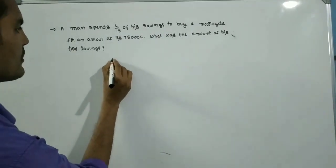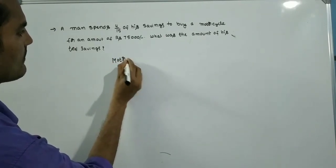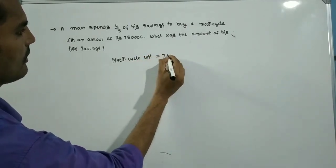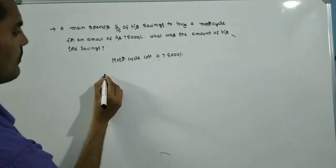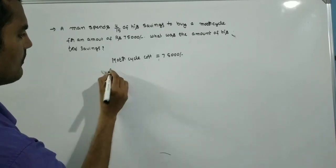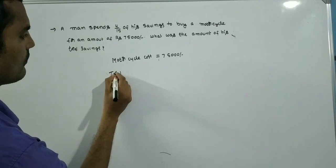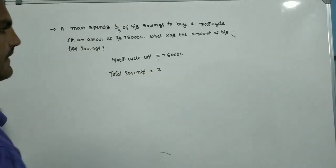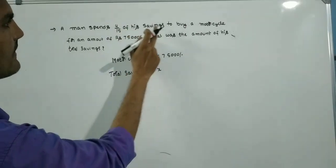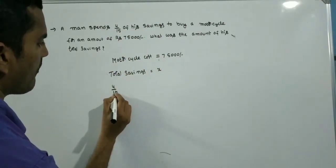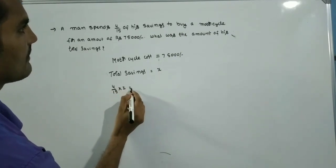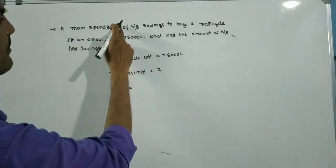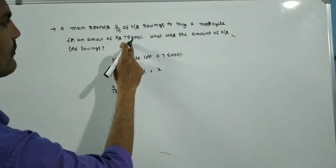The motorcycle cost equals Rs. 75,000. Total savings we don't know, so we assume it as X. The problem states 4/15 of his savings is spent towards a motorcycle for Rs. 75,000. This means 4/15 of X equals Rs. 75,000.